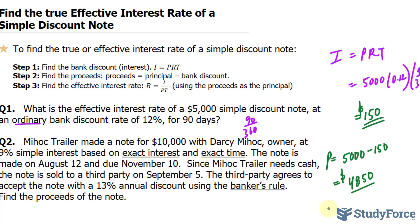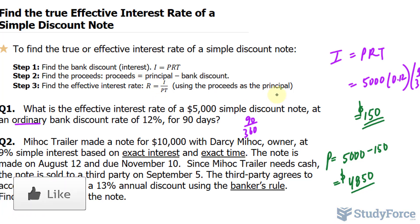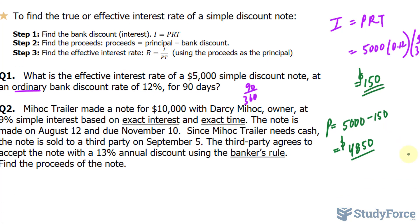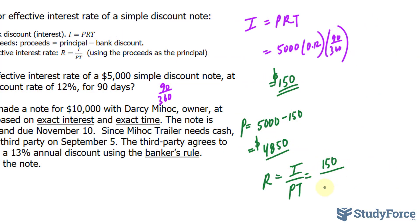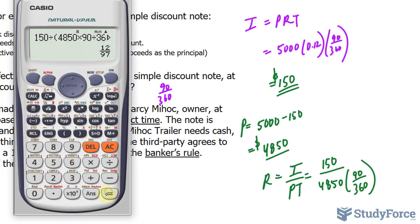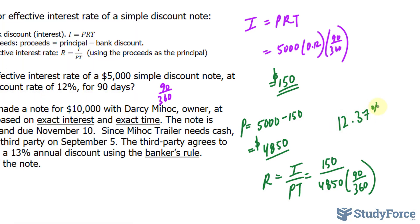Finally, find the effective rate, which is calculated using the proceeds as the principal. Using the formula R = I over PT: I we found to be 150, over 4,850 times 90 over 360. Using our calculator, you should get 0.1237 or 12.37%. Rounded to one decimal place, it's 12.4%.